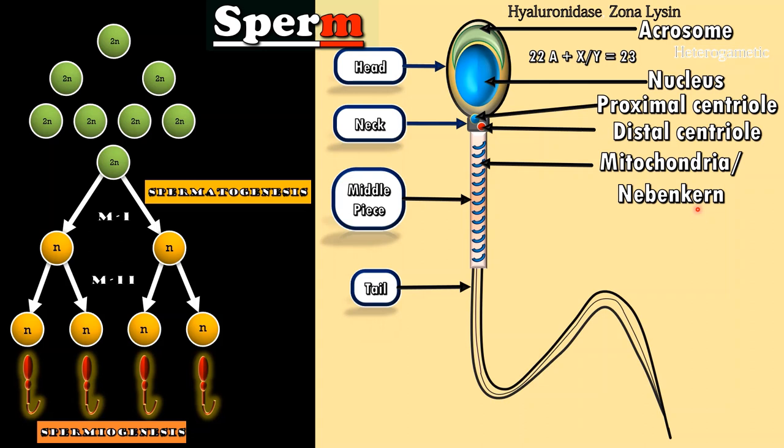The major part of the sperm is tail which is 50 micrometer in length. It is divided into two parts, main piece and end piece. Main piece is part with axial filament which is surrounded by cytoplasm and plasma membrane. End piece is part with axial filament but cytoplasm and plasma membrane are absent.